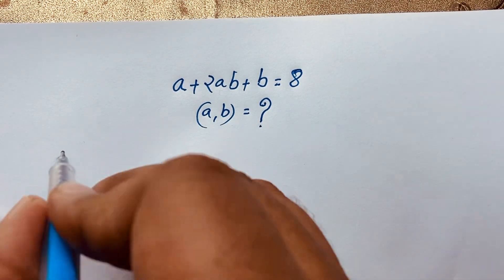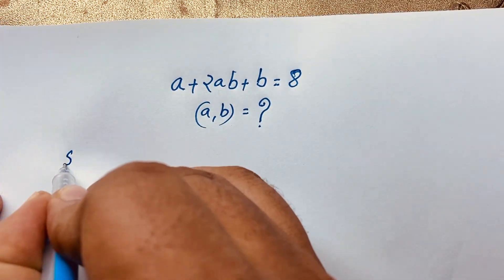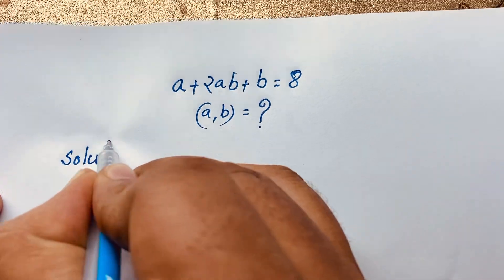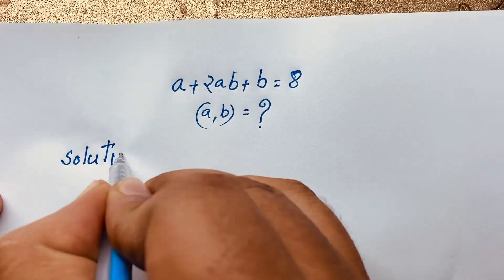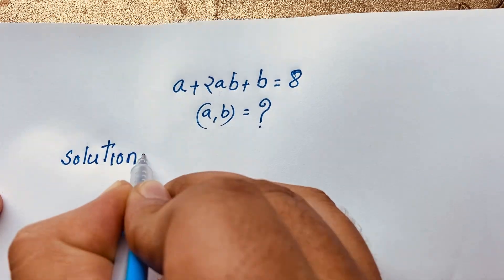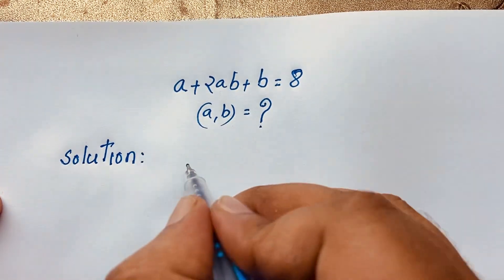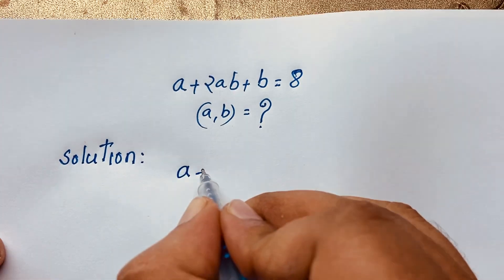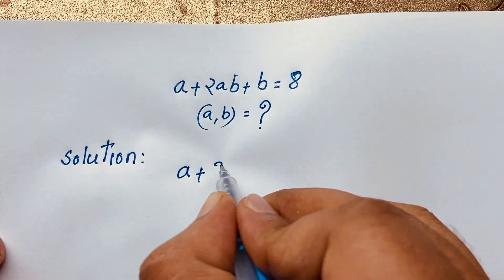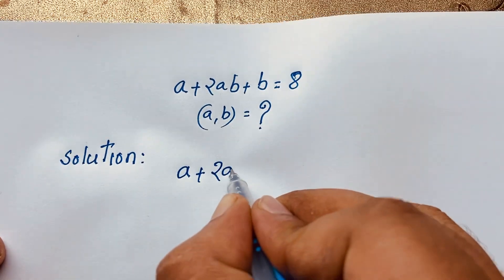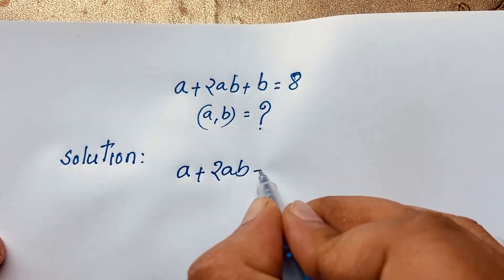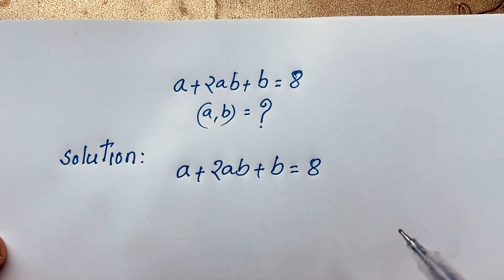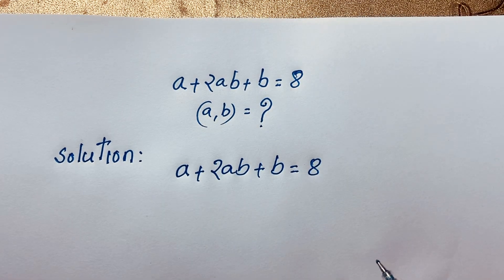So, solution. Our question is: A plus 2AB plus B is equal to 8. This is our question.